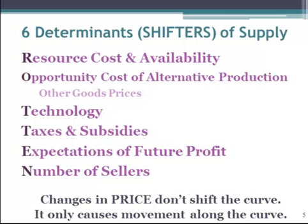There are six determinants of supply. Resource costs and availability. Other goods prices - this is the opportunity cost of alternative production. If I make volleyballs, is it cheaper for me to make footballs? Or can I make more profit off of making footballs and make that transition easily? Technology. Government taxes and subsidies. Higher taxes are bad, lower taxes are good. And anytime the government gives a subsidy, that means they're giving the producer money to do something, so subsidies are always good.